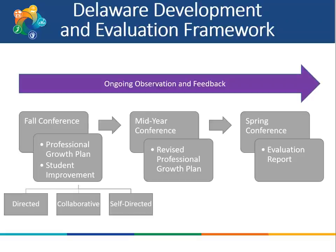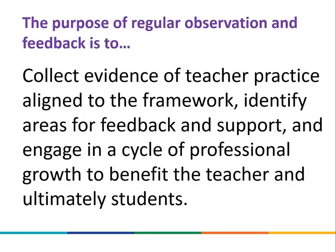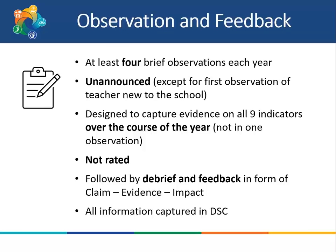Once professional growth and student improvement goals are set and the fall conference has occurred, the administrator can begin observations. The purpose of regular observation and feedback is to collect evidence of teacher practice aligned to the framework, identify areas for feedback and support, and engage in a cycle of professional growth to benefit the teacher and ultimately students. Classroom observations will be used to collect evidence to support rating each of the three performance areas and each of the nine indicators on the framework.